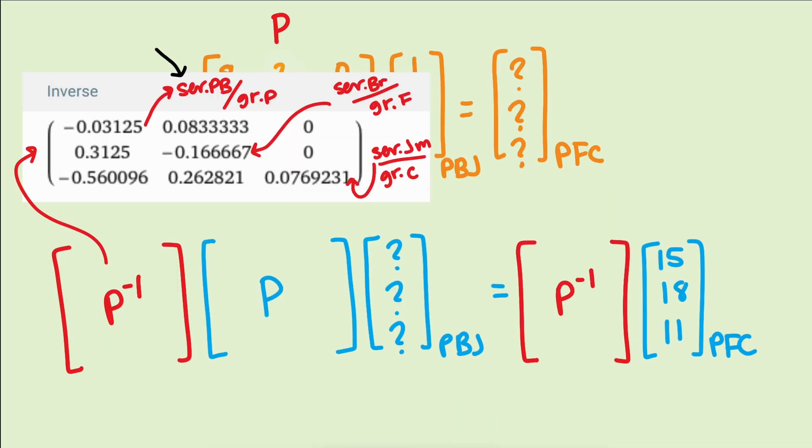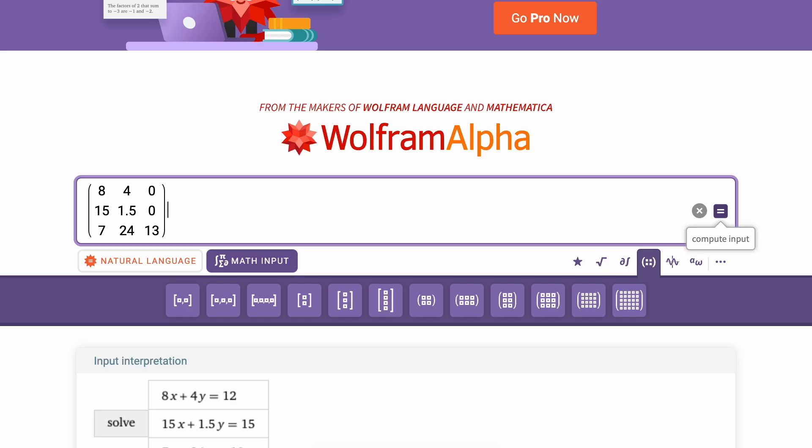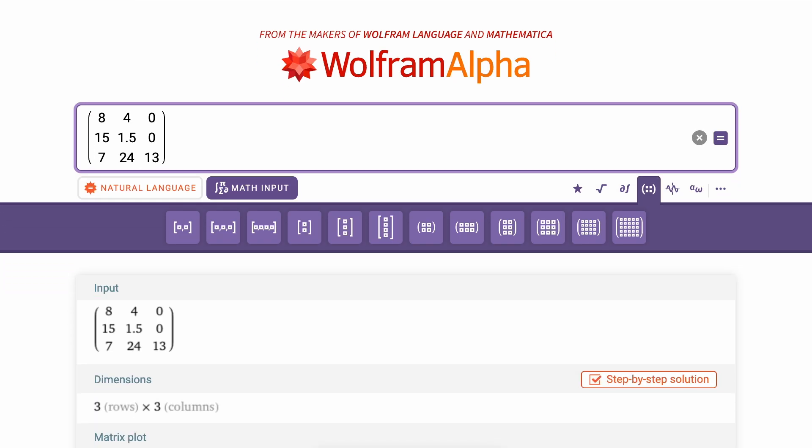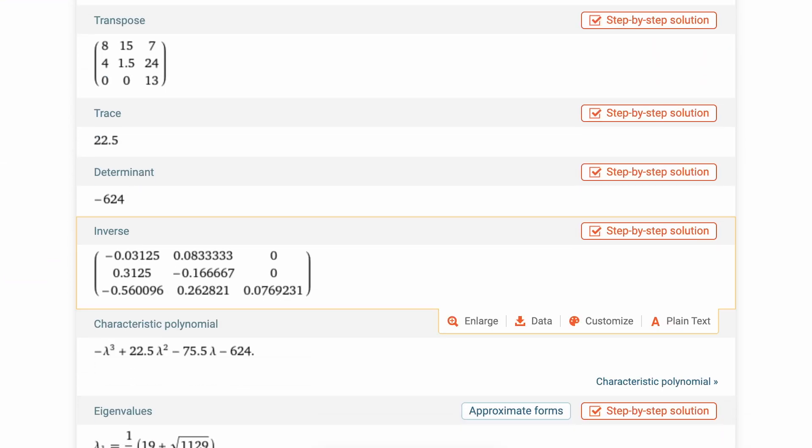In practice, it's usually easier to set up change of basis matrices, or to find the change of basis matrix, to go one way in the conversion rather than the other. But if we want to go the other way, we set up the easy matrix, which might be P or P-inverse, and then find the other one by taking the inverse matrix. And this is easily done by typing in the matrix into Wolfram Alpha.